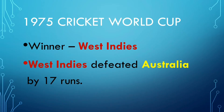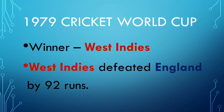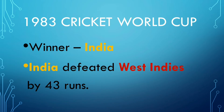1975 Cricket World Cup Winner: West Indies. West Indies defeated Australia by 17 runs. 1979 Cricket World Cup Winner: West Indies. West Indies defeated England by 92 runs. 1983 Cricket World Cup Winner: India. India defeated West Indies by 43 runs.